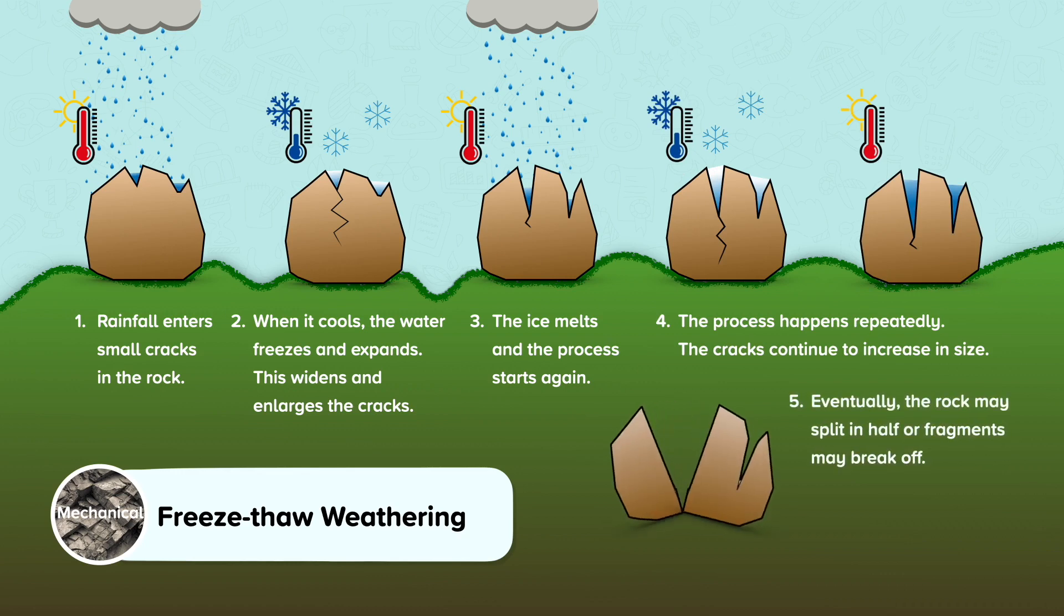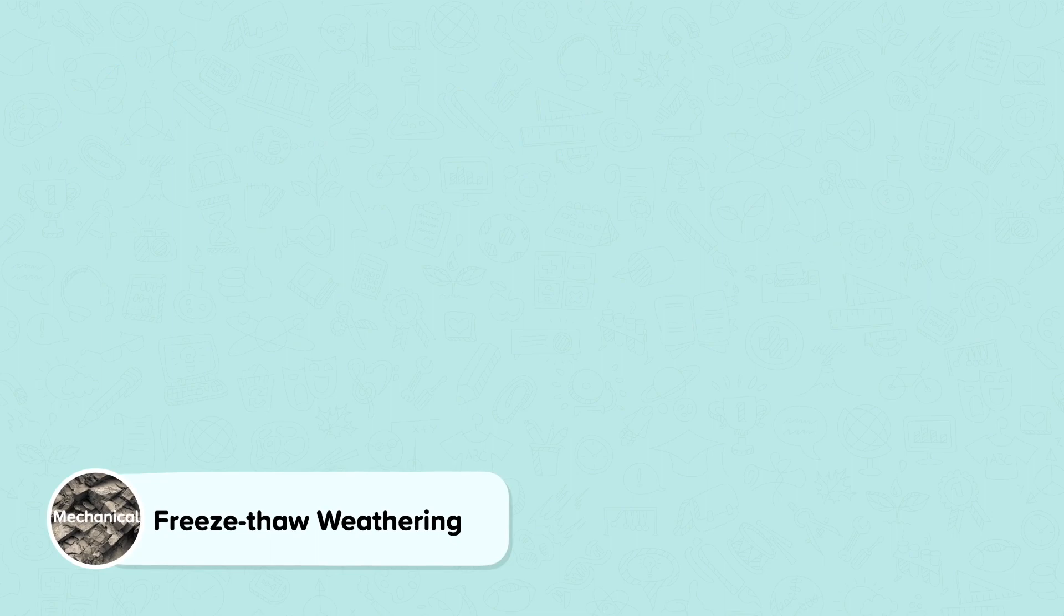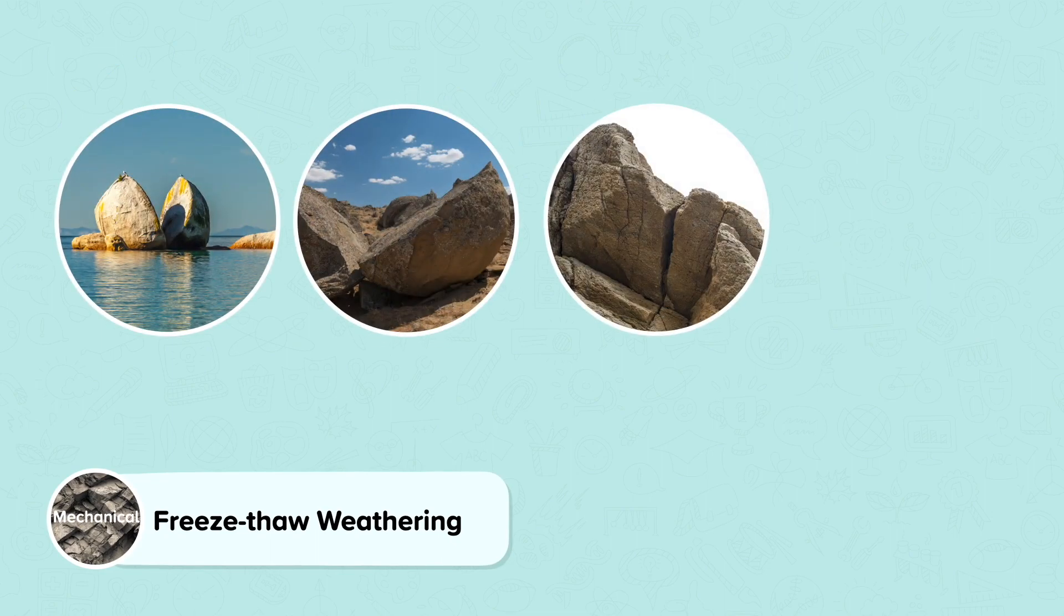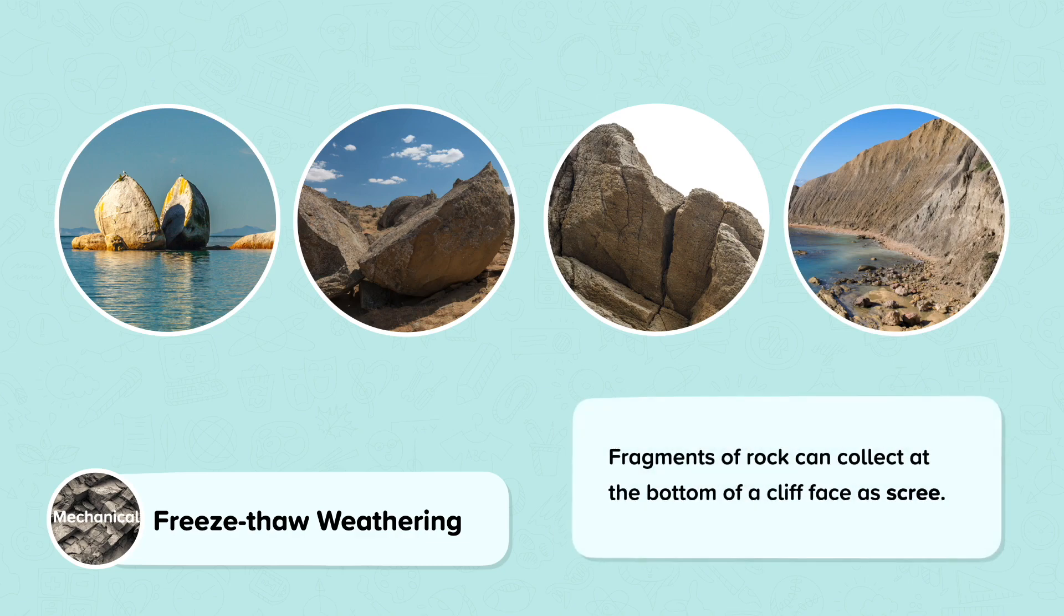Eventually the rock may split in half, or fragments may break off. These images show examples of freeze-thaw weathering. Fragments of rock can collect at the bottom of a cliff face as scree.